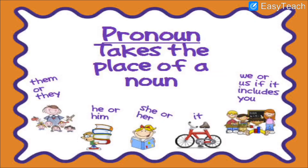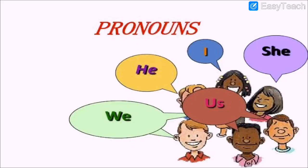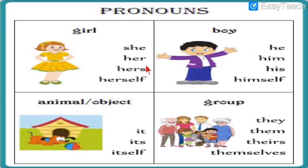We had learnt some more pronouns. For girls, you can use: she, her, hers, herself. For a boy, you can use: he, him, his, himself. For an animal or object — a non-living thing — you can use: it, its, or itself. For a group of people, you can use: they, them, theirs, and themselves.